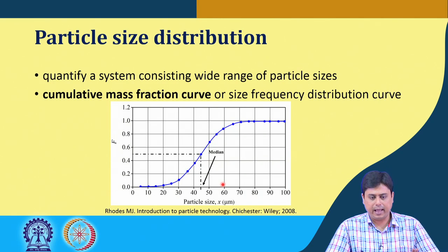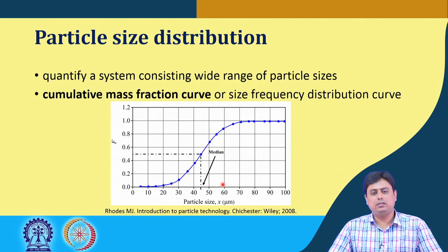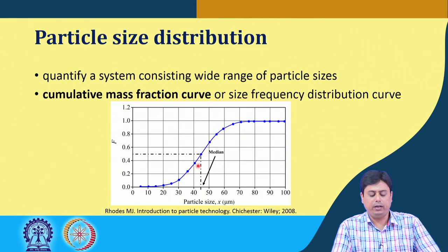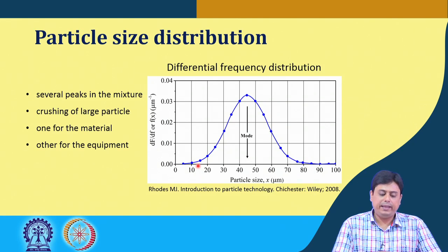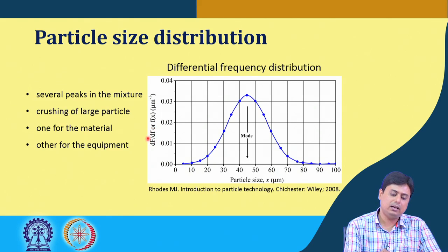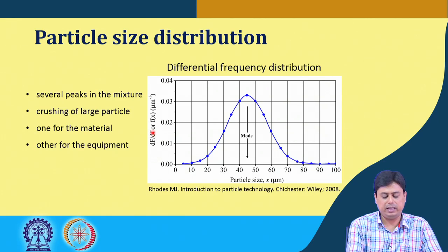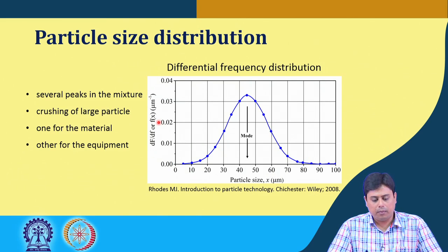This is one of the easiest examples, and such a plot is called the cumulative mass fraction curve or size frequency based on cumulative mass fraction. The other size frequency representation is obtained by taking the slope at each and every point of this curve and plotting it, which yields something called the differential frequency distribution. On the x-y axes, this is the slope of the previous graph — the derivative d(f)/d(x), or f(x), which we call the differential frequency distribution.